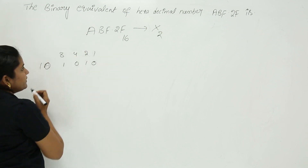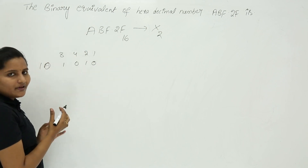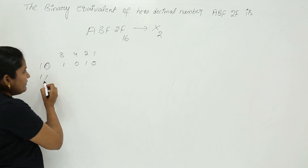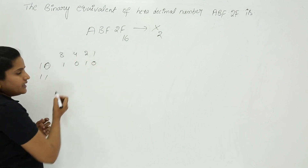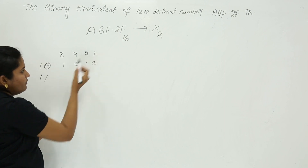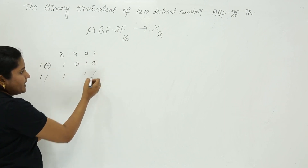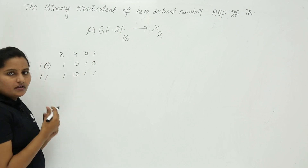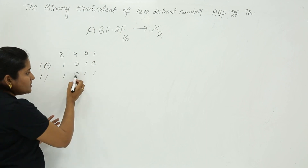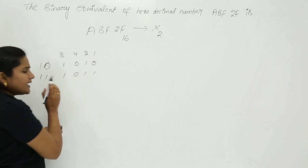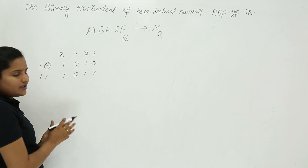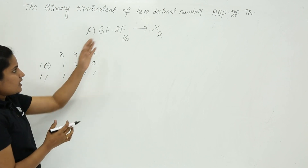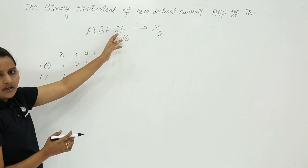For B, that means 11. For 11, the digit positions you need are 8, 2, and 1. You enable those places with 1, and the remaining place you put 0. So the binary for B or 11 is 1011.